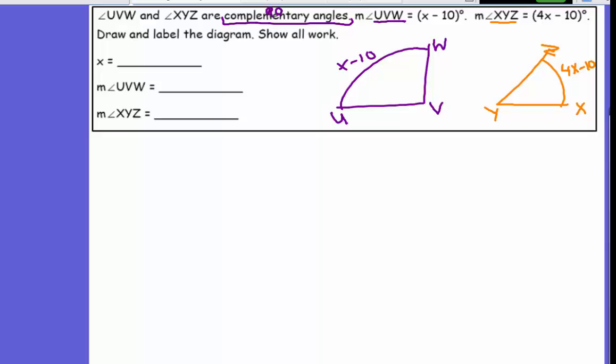When two angles are complementary to each other, you add those two together to get you 90 degrees. So this angle plus this angle is going to give you 90 degrees. So this angle is X minus 10 plus the other one is 4X minus 10. That's negative 20 equals 90. This is going to give you a total of 90 degrees.